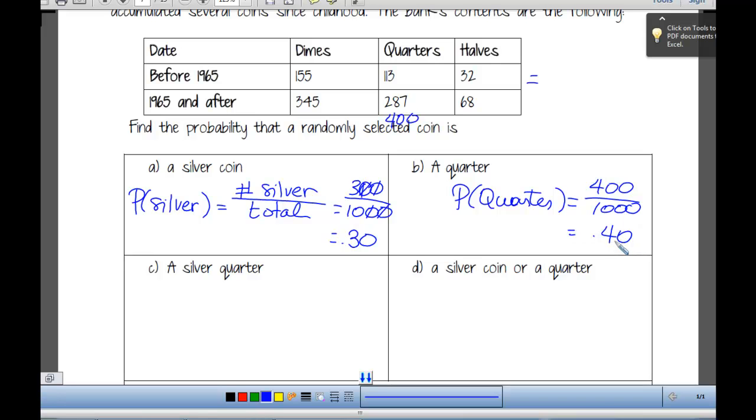And what about the probability of a silver quarter? How many silver quarters do we have? Okay, 113, and we're going to divide that by 1,000, which comes up to 0.113.